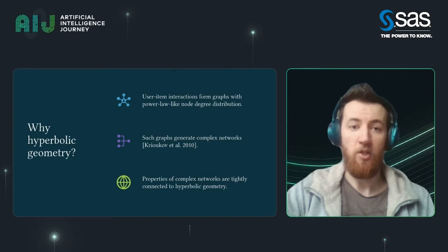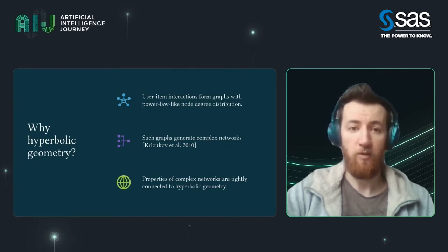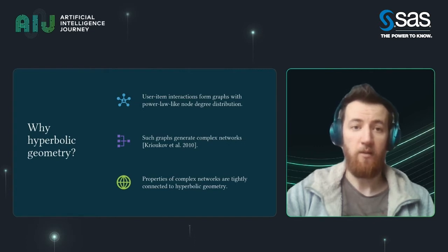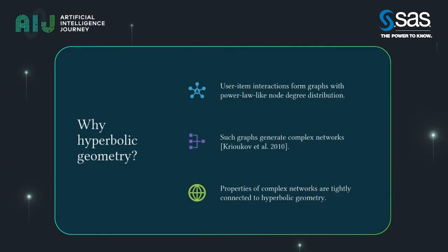And now you might ask: why hyperbolic geometry? Well, it turns out that if we want to model the nature of the data, the connection is pretty straightforward and we can show it through these three points. The standard collaborative filtration algorithm task can create a graph of interaction between users and items.